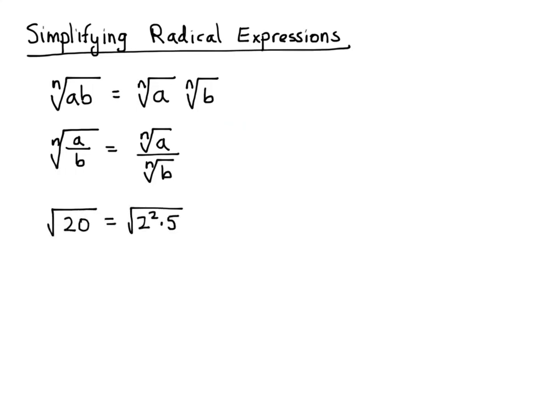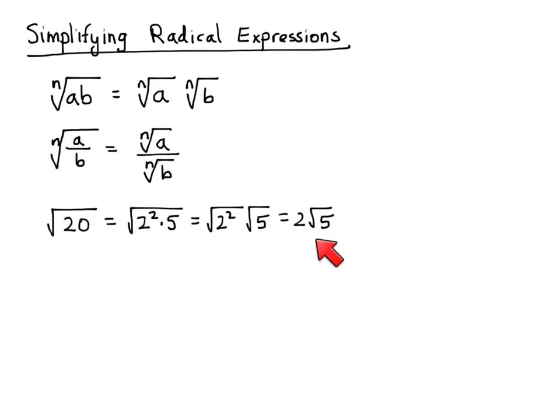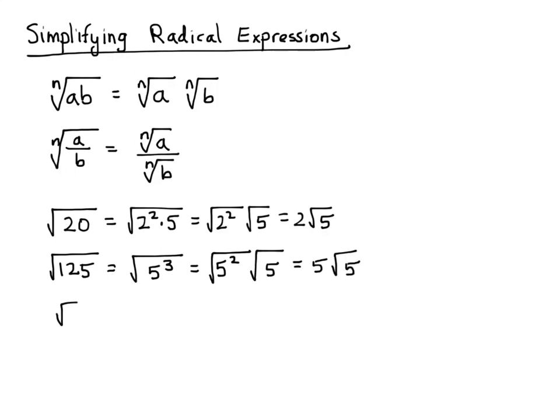To simplify the square root of 20: factor 20 as 4 times 5, or 2 squared times 5. Separate that into the square root of 2 squared times the square root of 5. The square root of 2 squared is 2, so you get 2 times the square root of 5. We've taken all the perfect square factors out of the square root of 20.